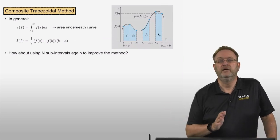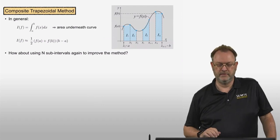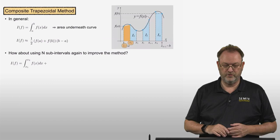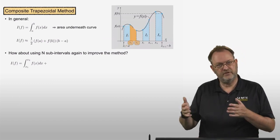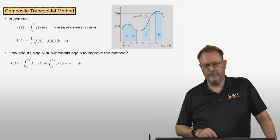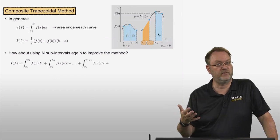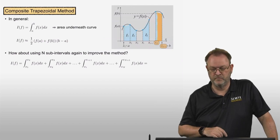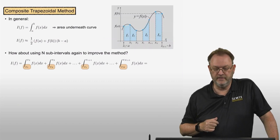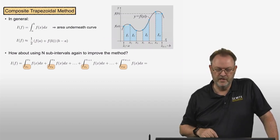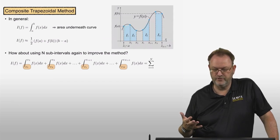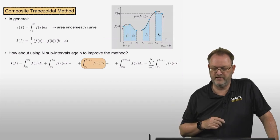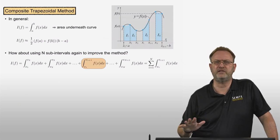To improve on this we apply the formula to subintervals again — n subintervals. Applying it to the first subinterval x1 to x2, plus the second x2 to x3, and so on through the ith subinterval xi to x_{i+1}. This can be written compactly as the sum from i=1 to n of the integral from xi to x_{i+1} of f(x) dx — our general composite integration formula.